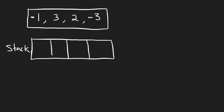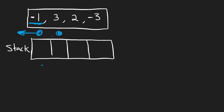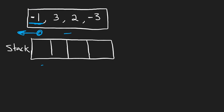Let's say we have the first one, negative 1. This asteroid is moving to the left because it's negative. Any asteroid that comes after it, whether it's moving to the left or moving to the right, nothing is ever going to collide with this negative 1 now, because all asteroids are moving at the same speed and this is the leftmost asteroid moving to the left. Nothing is ever going to collide with it.